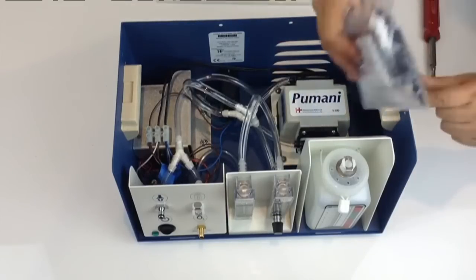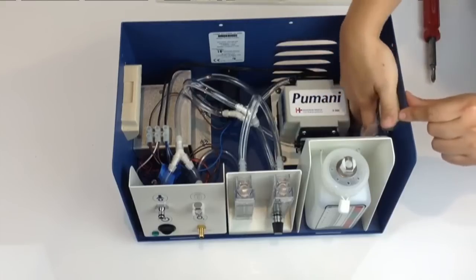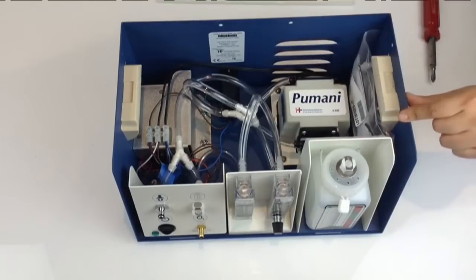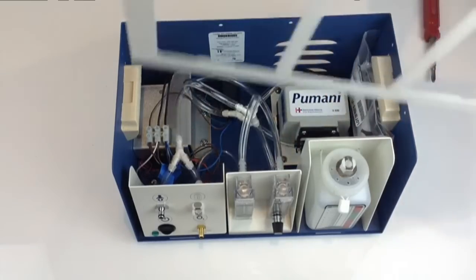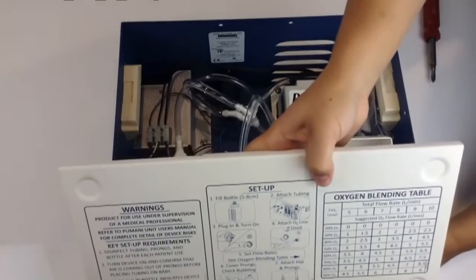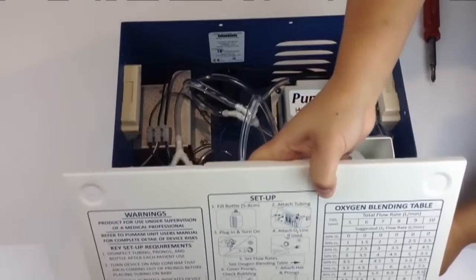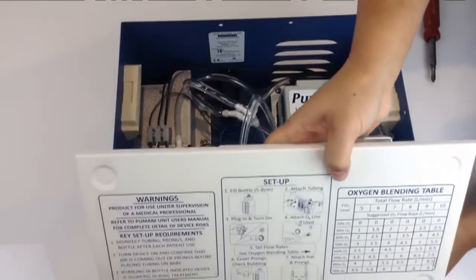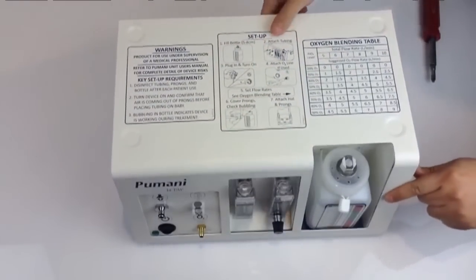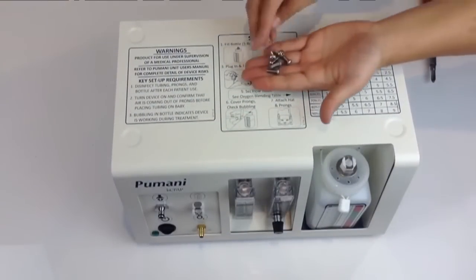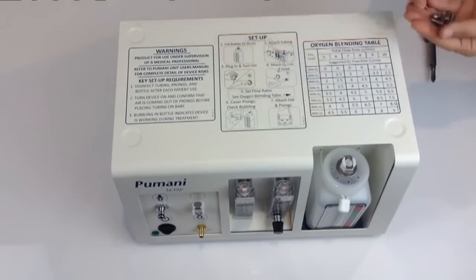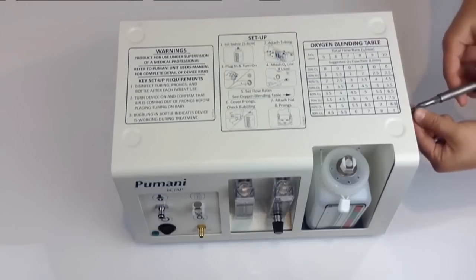You can then put the contents of the spare parts back into the bag and reattach the bag to the wall of the unit. Then take the lid and place the lid back on the unit. Making sure it snaps into place. And then you'll take your six screws and secure the lid with the six screws.